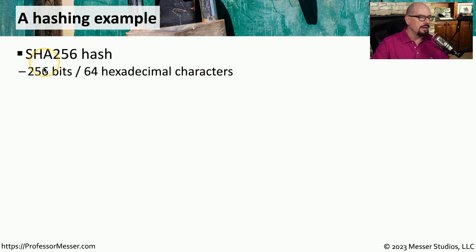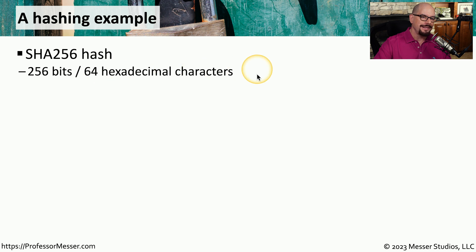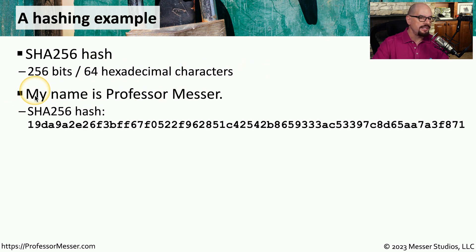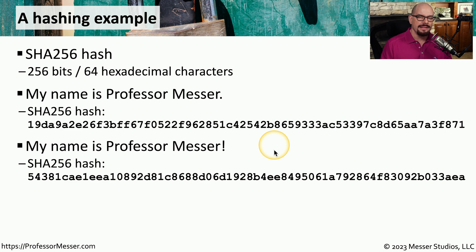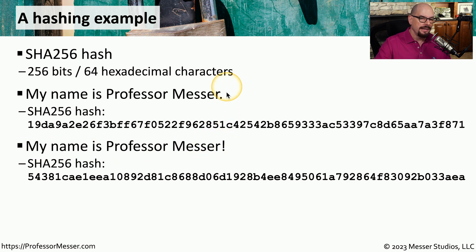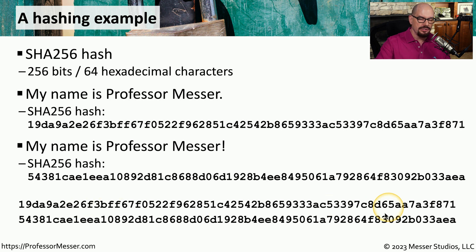Here's an example of how a hashing algorithm should work. Let's use the SHA-256 hashing algorithm, which provides a hashing output of 256 bits, represented on screen as 64 hexadecimal characters. Our first input is the sentence 'My name is Professor Messer.' ending in a period, and we get the corresponding SHA-256 output. Now let's change one character — the sentence now ends in an exclamation mark instead of a period — and you'll notice that the SHA-256 hash output is very different than the one created previously. This shows that hashing algorithms can really help us protect data, because we're able to create very different hashing output even though the input may be very similar.